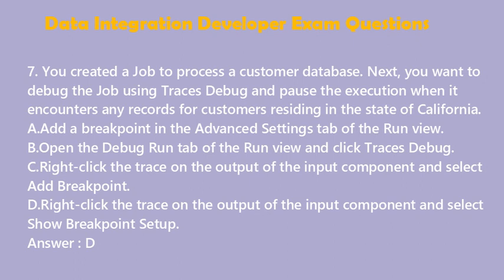Question 7: You created a job to process a customer database. You want to debug the job using Traces Debug and pause the execution when it encounters any records for customers residing in the state of California. A. Add a breakpoint in the advanced settings tab of the run view. B. Open the debug run tab of the run view and click Traces Debug. C. Right-click the trace on the output of the input component and select Add Breakpoint. D. Right-click the trace on the output of the input component and select Show Breakpoint Setup. Answer: D.